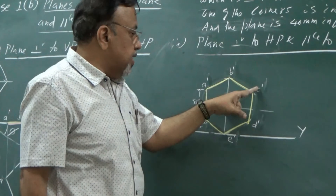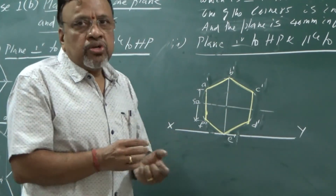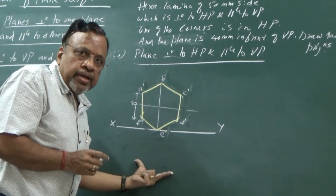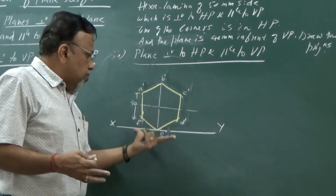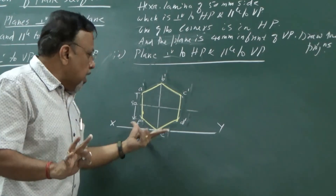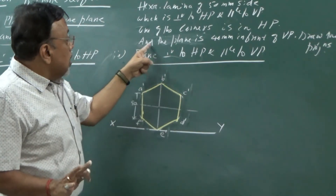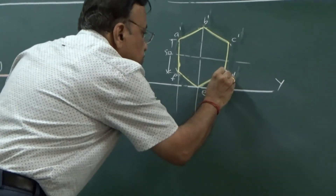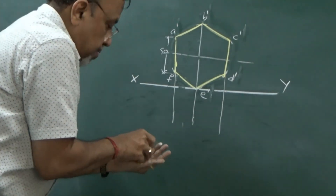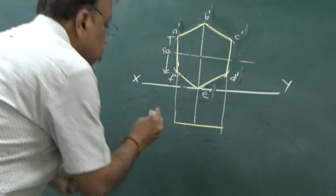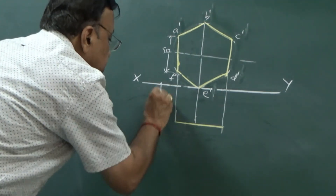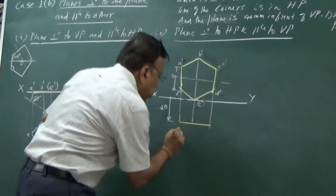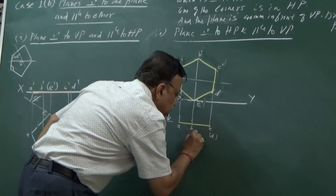The front view is complete. Now I need to draw the top view. Since the lamina is perpendicular to HP, in the top view it should be seen as a line. If nothing is mentioned, I can place it on XY or below XY. But here, the lamina or plane is 40 mm in front of VP, so I draw the line 40 mm below the XY line.